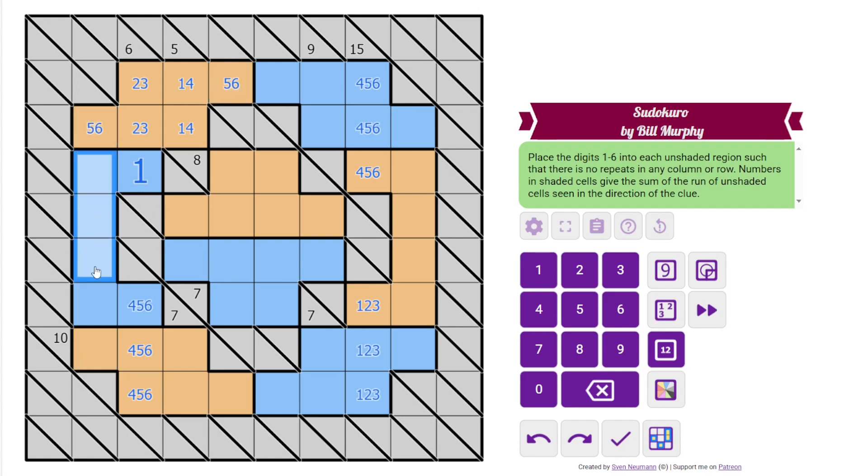So where does 1 go in this column? Can't go in these cells. Must go here. Whatever this digit is, can't go in these cells. So in the blue region here, it must go here. So that's not 4. All right, let's come over here.